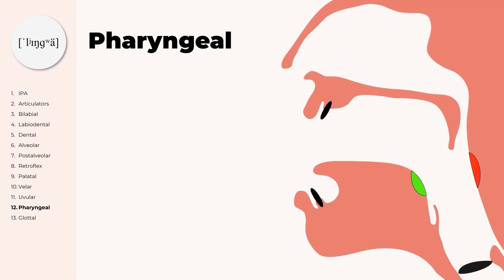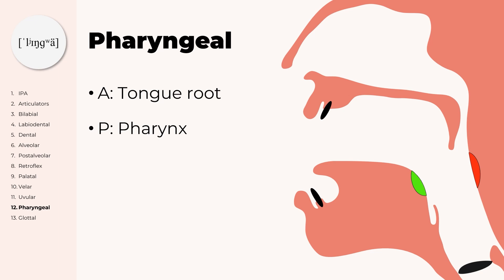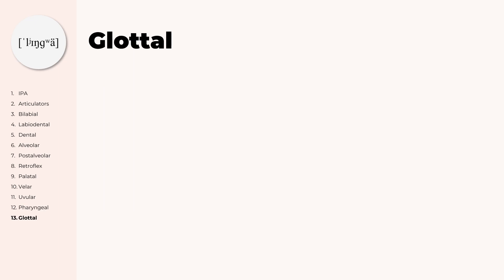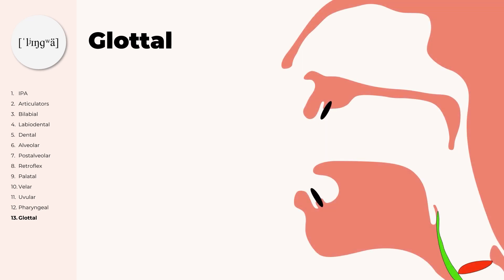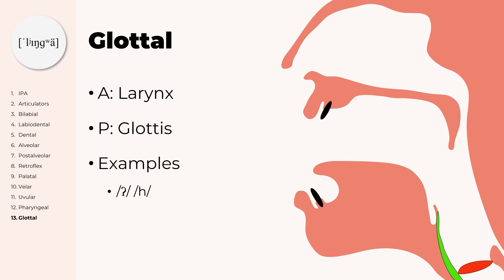Pharyngeal sounds are made with the tongue root being active against the pharynx. The pharynx is the area behind the oral cavity and the nasal cavity. Examples for pharyngeal sounds are the voiceless pharyngeal fricative and the voiced pharyngeal fricative. Lastly we have the glottal consonant sounds, which are made with the larynx and the glottis. Examples for glottal sounds are the glottal stop and H.